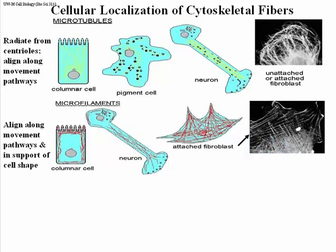Here is a fluorescence micrograph using fluorescent antibodies against actin, localizing actin bundles in cells. Look at the attached fibroblast in the cartoon, and look at the fluorescence micrograph — you get a sense of these crisscrossing fibers that look like they are penetrating the processes that this cell is extending. Those are the pointy parts — the processes being extended by the cell — and you see that in both the picture and the cartoon.